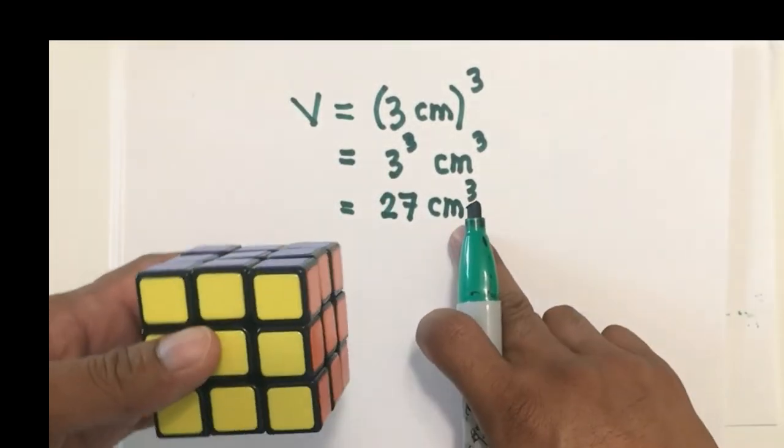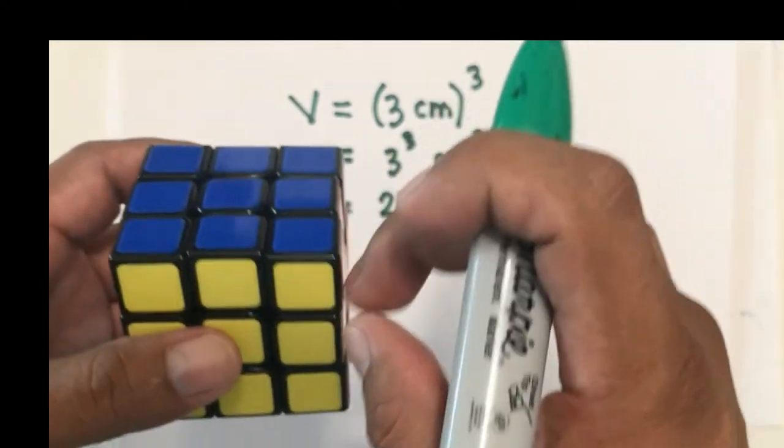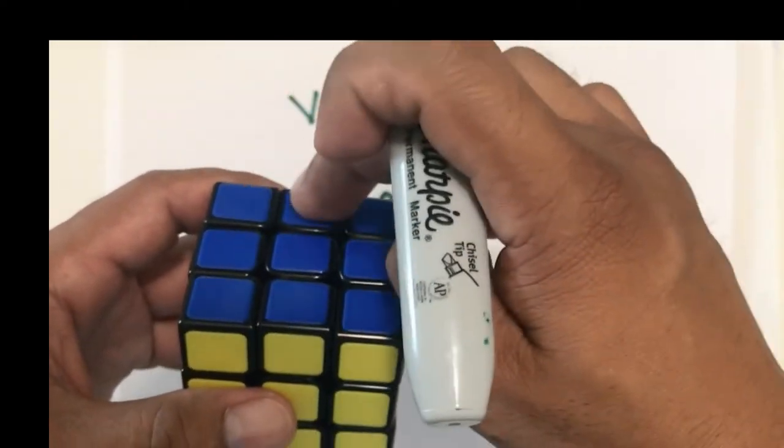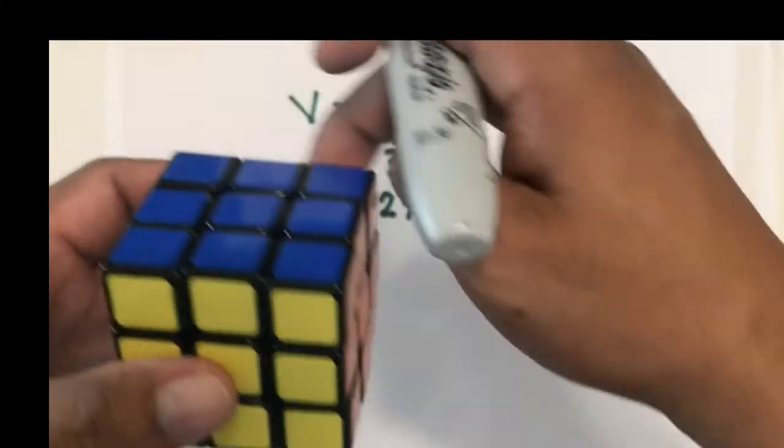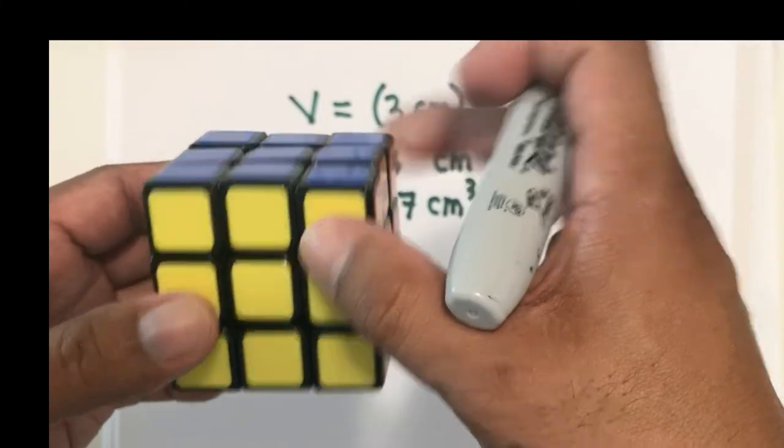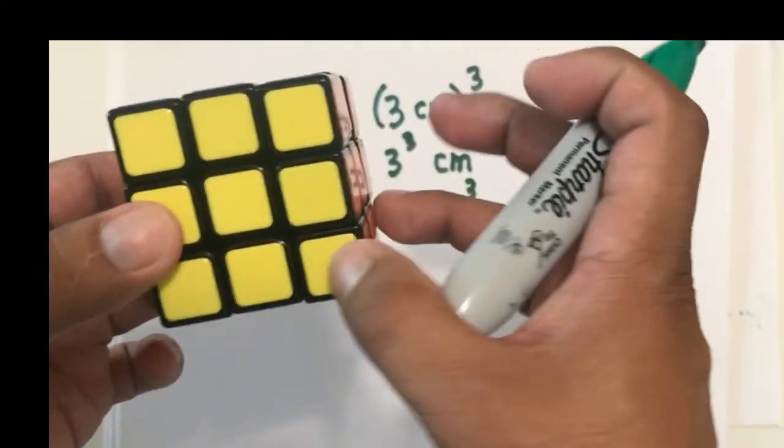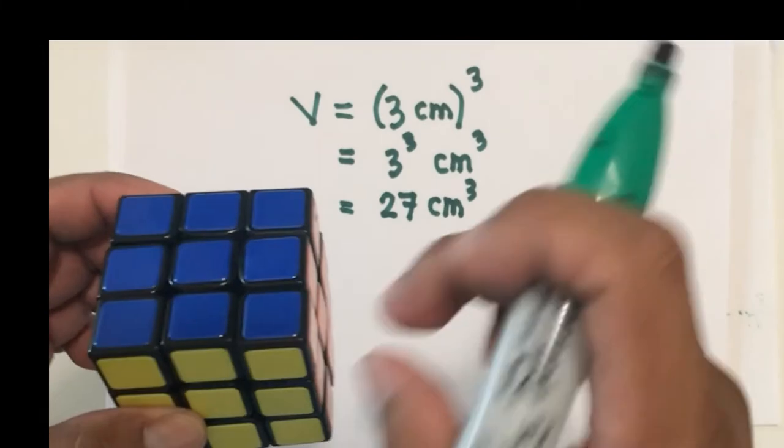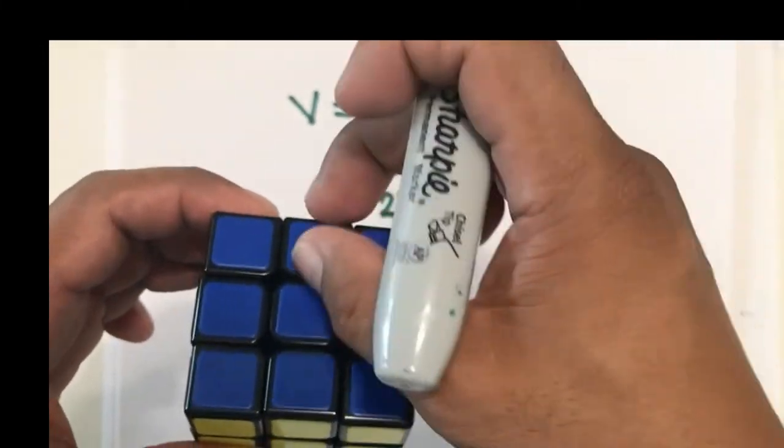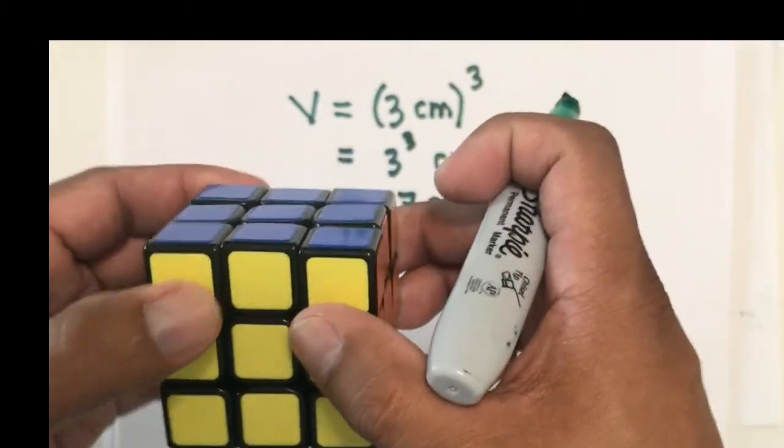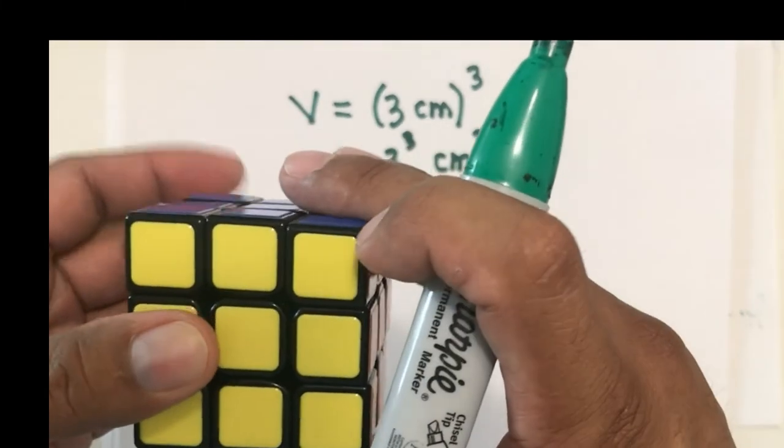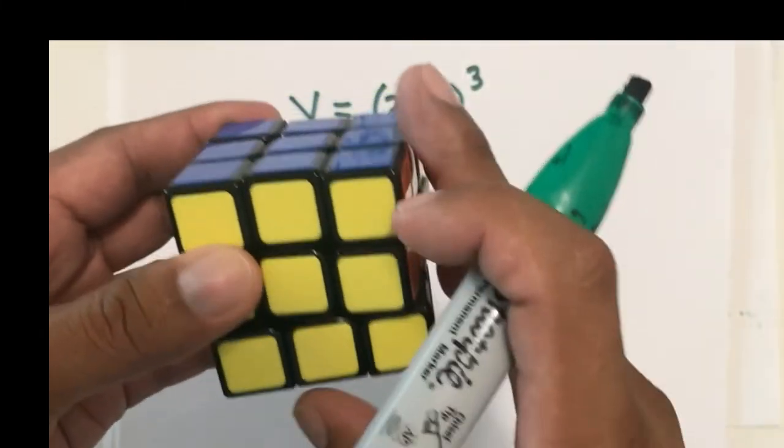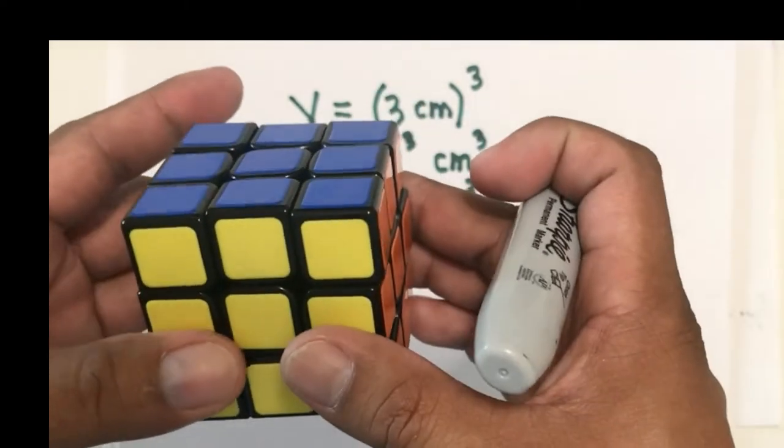So you think now of the centimeter cube as this smaller cube. You have 1, 2, 3, 4, 5, 6, 7, 8, 9. 9 at the first layer, another 9 at the second layer, and another 9 at the last layer. Together, you have 27 of these smaller cubes. And all those 27 smaller cubes occupy the space inside the bigger cube, the 3 by 3 cube.